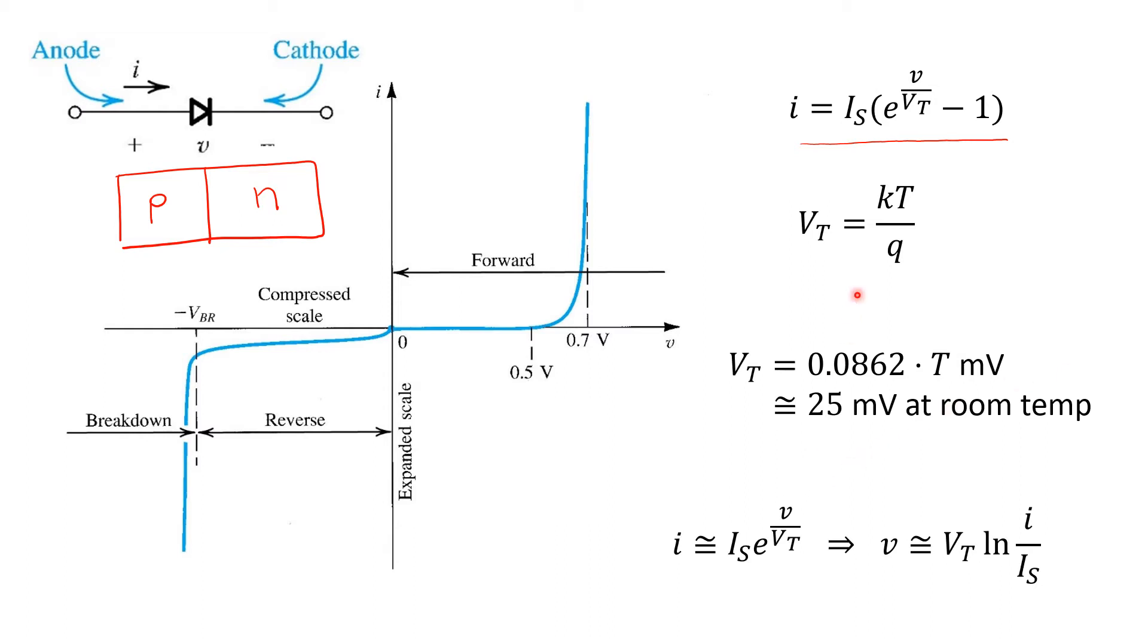Now, you may also note that for forward voltages V that are at least 2, 3, 4 times larger than the thermal voltage VT, which is again only 25 millivolts at room temperature, we can neglect the term minus 1 in this expression and arrive at a simple exponential relationship, as shown here. Again, this relationship is very accurate for forward voltages greater than about 100 millivolts.